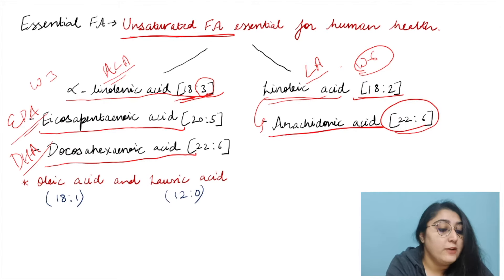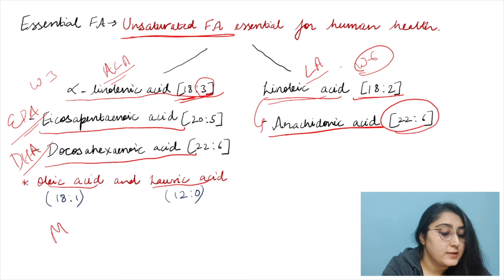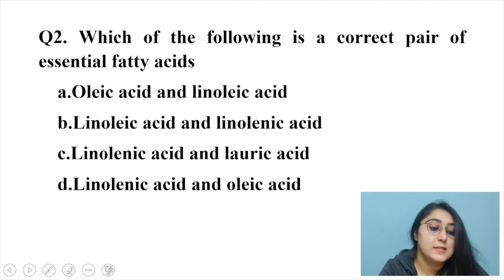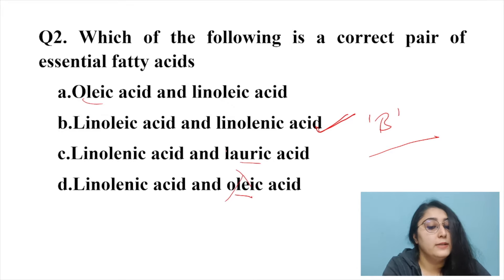The other options include oleic acid, a MUFA with a single double bond, and lauric acid, a saturated fatty acid. Neither is essential. The correct answer is the pair of linolenic acid and linoleic acid — option B.